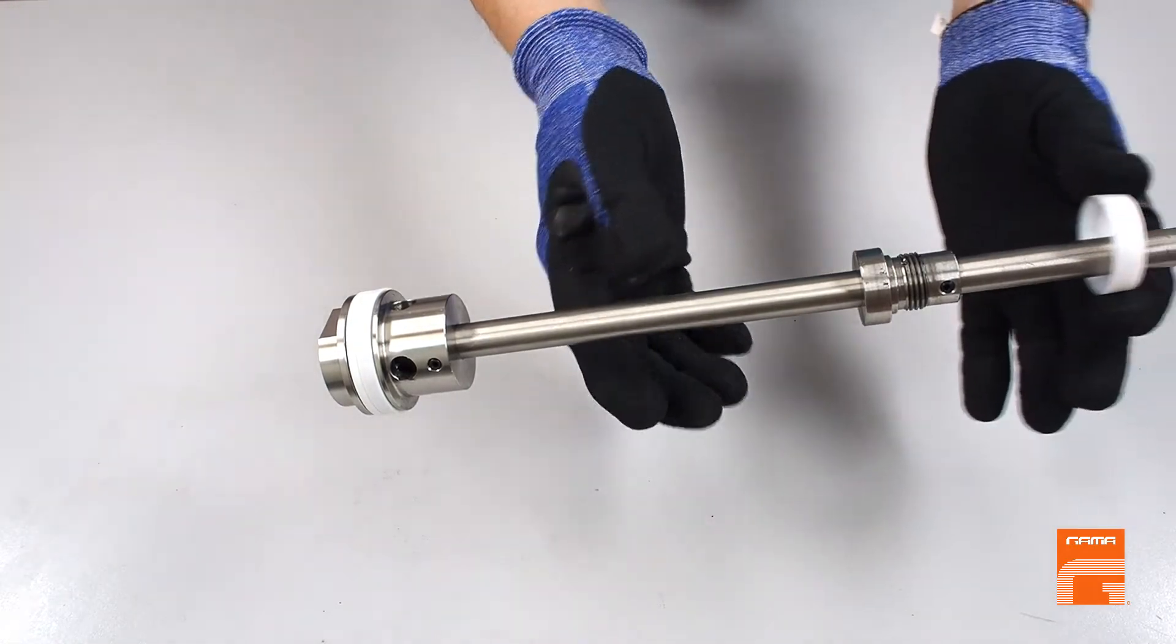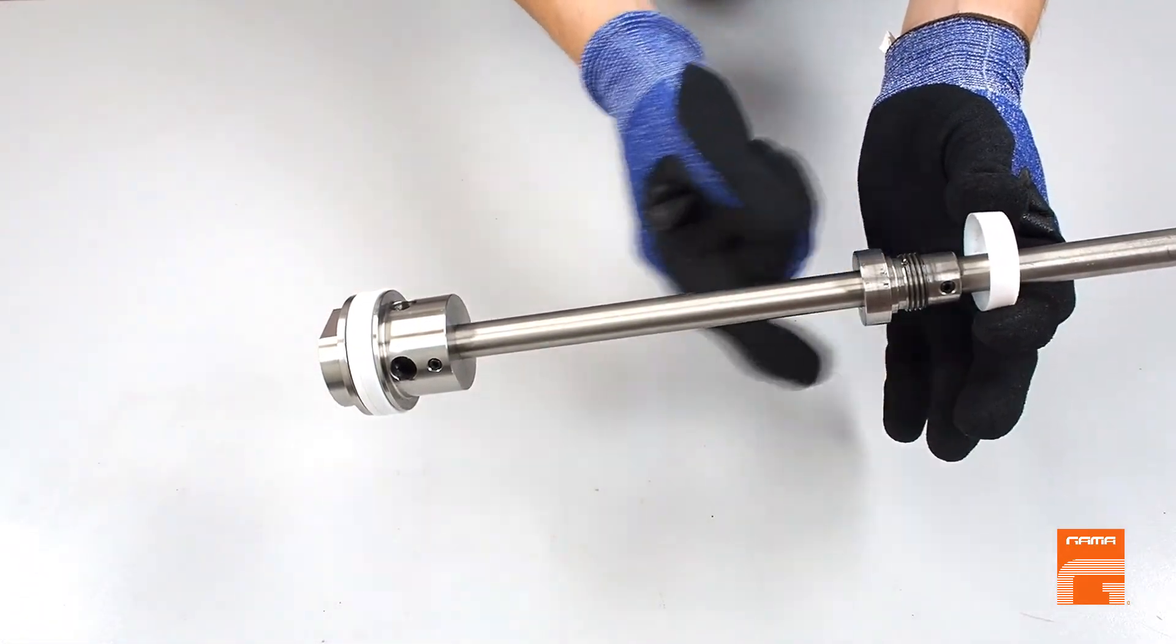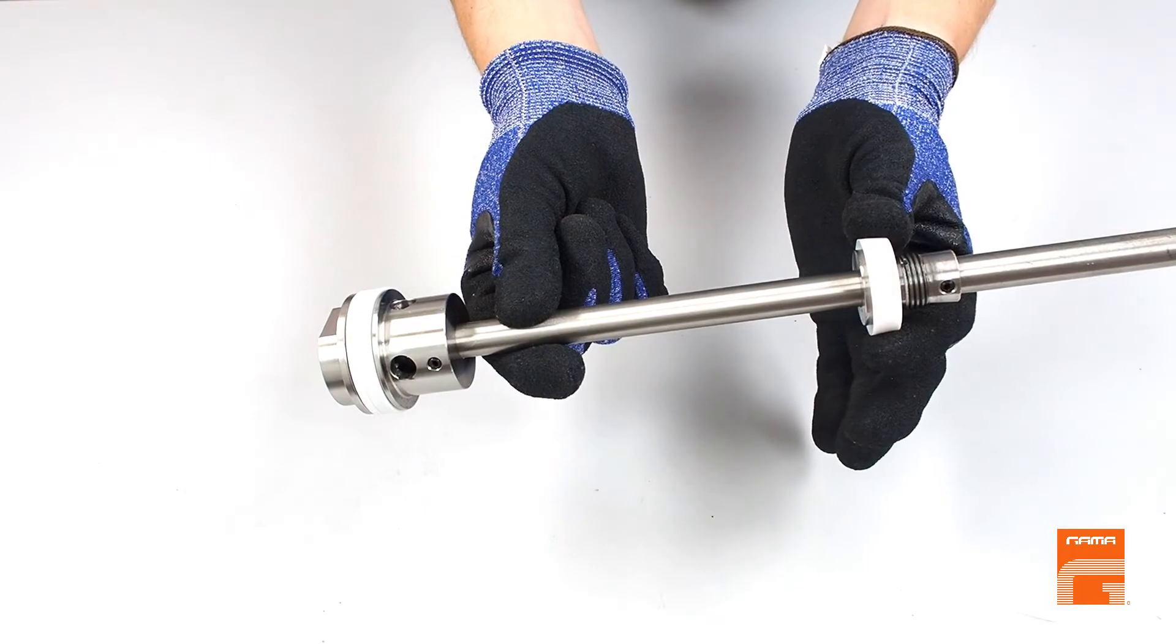When installing the small seal, don't forget that the lips of the seal should be directed downward.